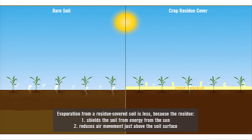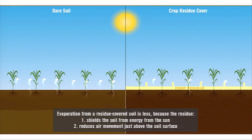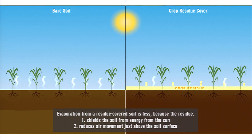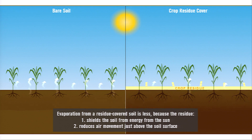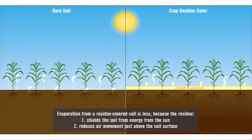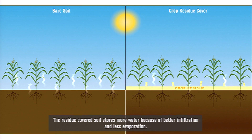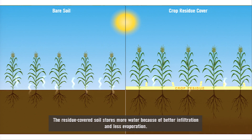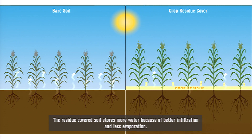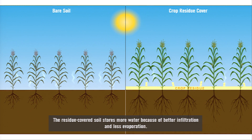Evaporation from a residue-covered soil is less than evaporation from a bare soil because the residue shields the soil from energy from the sun and reduces air movement just above the soil surface. In summary, the residue-covered soil stores more water than the bare soil because of better infiltration of water into the soil and less evaporation of water from the soil surface.